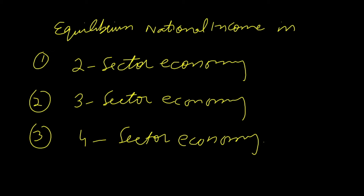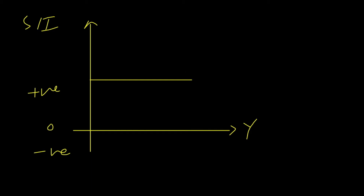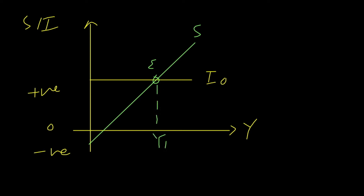In two sector economy, equilibrium national income takes place at a point where investment is equal to savings. On the y-axis I am showing saving and investment, and on the x-axis I am showing national income. Investment in two sector is taken as autonomous investment, so investment is I-naught. The saving curve starts from the negative region and is positively sloped. Equilibrium takes place at point E where saving and investment intersect, giving equilibrium national income Y1.